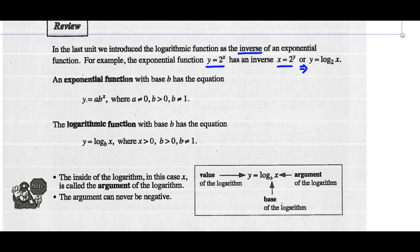An exponential function with a base of b has this equation: y equals a times b to the x. We've got these restrictions: a cannot equal 0, b must be greater than 0, and b cannot equal 1. A logarithmic function with a base of b has the equation y equals the log of x base b. The restrictions are: x must be greater than 0, b must be greater than 0, and b can never equal 1.